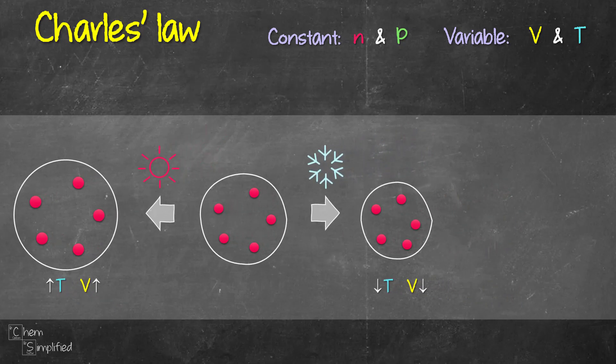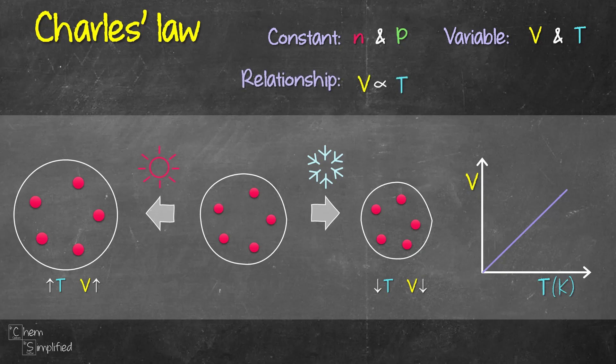We can graph this relationship like this. When volume increases, temperature increases. And we can say that volume and temperature are directly proportional. And we can rewrite it mathematically to show that when volume is divided by the temperature, it's equal to a constant, which we're just going to randomly call K. That means if we have two sets of data, initial and final, we can write it out as V1 divided by T1 equals V2 divided by T2. That's the formula of Charles' Law.